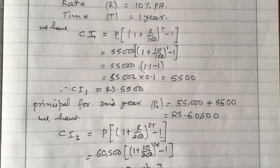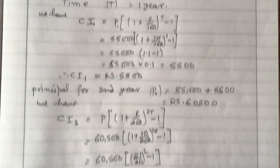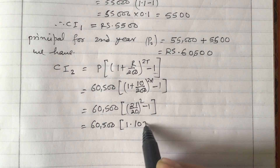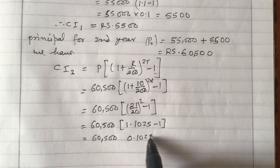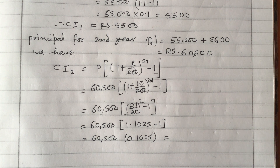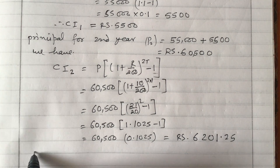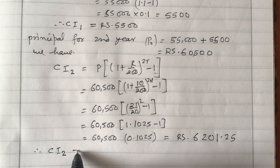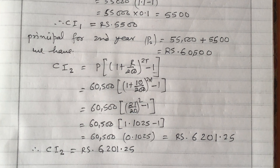Calculating: 21/20 = 1.05, and (1.05)^2 = 1.1025. So CI2 = 60,500 × (1.1025 − 1) = 60,500 × 0.1025 = Rs 6,201.25. Therefore, the compound interest for the second year, CI2, equals Rs 6,201.25.